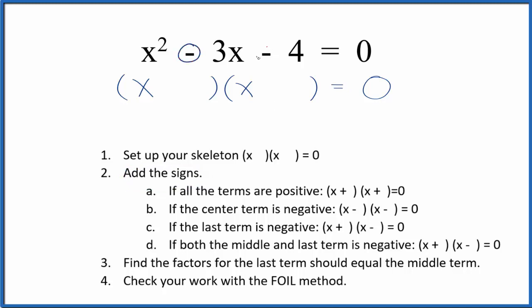So we have a negative and a negative. If both the middle and the last term are negative, we'll put a positive and a negative in our skeleton equation.